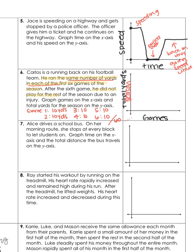Question seven says: Alice drives a school bus. On her morning route, she stops at every block to let students on. Graph the time on the x-axis and the total distance the bus travels on the y. So this should continue to go up — as the bus driver drives, she would be adding more miles onto her route every stop she had to make.